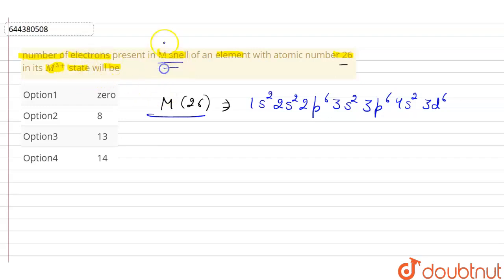Now the question is asking number of electrons present in M shell. We know that the shells are in the order K, L, M, N, and for K n=1, for L n=2, for M n=3, and for N n=4. So we have to find the number of electrons in M shell.